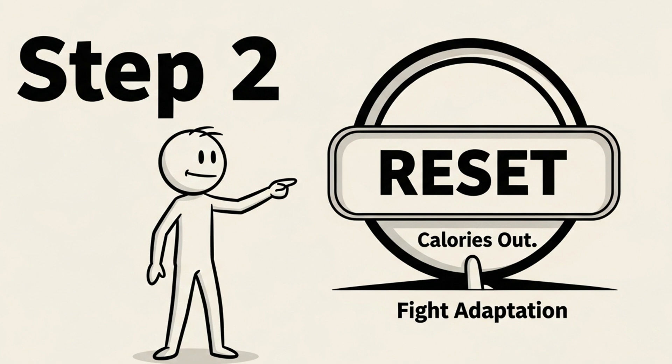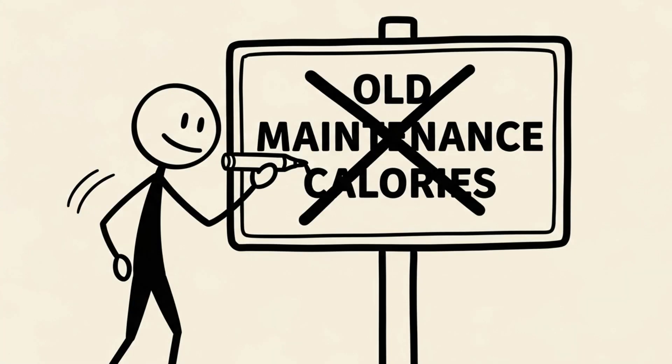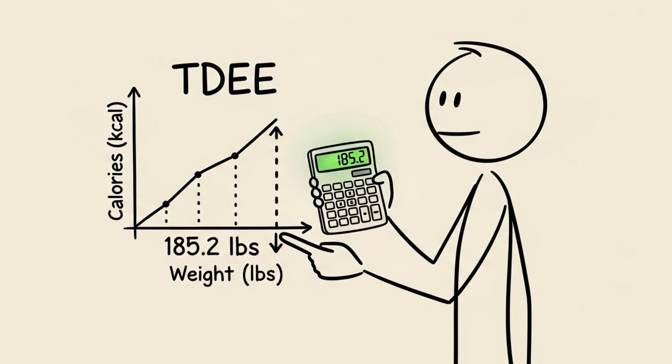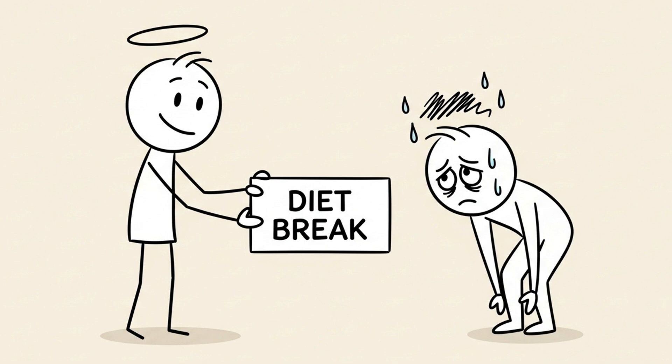Step two, reset your out. Fight adaptation. Your old maintenance calories are wrong. Recalculate your TDEE based on your new, current body weight. But more importantly, consider a diet break.